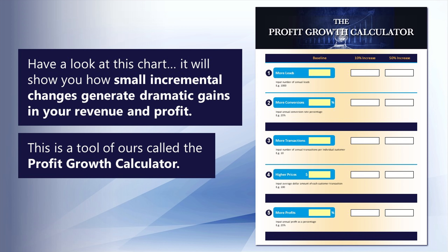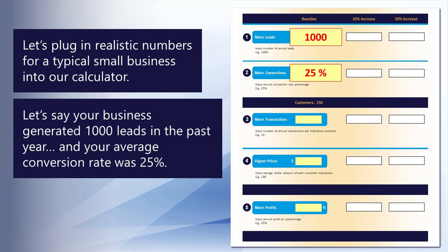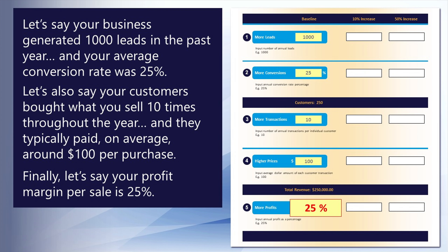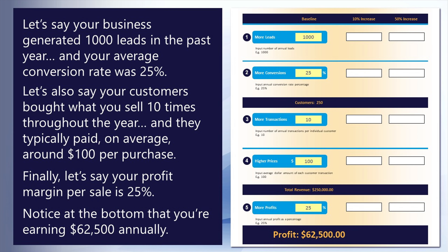This is a tool of ours called the Profit Growth Calculator. Let's plug in realistic numbers for a typical small business. Let's say your business generated 1,000 leads in the past year, and your average conversion rate was 25%. Let's also say your customers bought what you sell 10 times throughout the year, and they typically paid around $100 per purchase. Finally, let's say your profit margin per sale is 25%. Notice at the bottom that you're earning $62,500 annually.